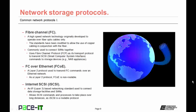Then we have FC over Ethernet, or FCoE. It's a layer 2 protocol used to transmit FC commands over an Ethernet network. As a layer 2 protocol, FCoE is non-routable. Finally, we have Internet SCSI, or iSCSI. It's an IP-based network standard used to connect data storage facilities and storage-attached networks. It is a layer 3 protocol, and it allows SCSI commands and processes to take place over long distances, as iSCSI is a routable protocol.